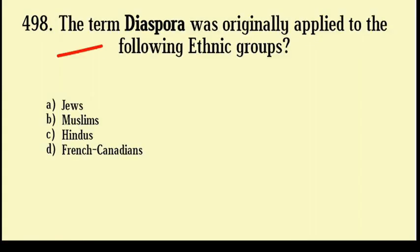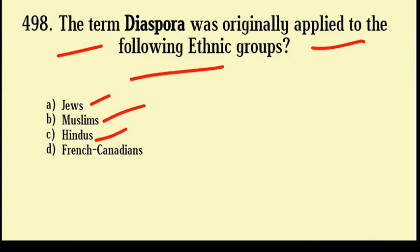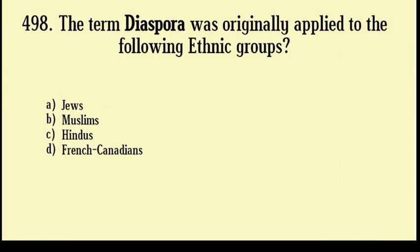The term Diaspora was originally applied to which of the following ethnic groups? Jewish, Muslim, Hindus, French, Canadian. Correct answer: Option number A, Jewish.